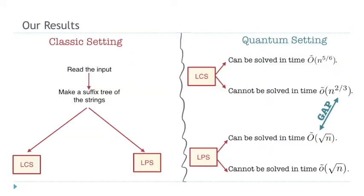The reason we consider these two problems is that they are pretty much equivalent in the classical setting — we can solve both of them in linear time. The algorithm for both uses a suffix tree and is basically the same, except that one line of the code differs between them. For both, we read the input, build a suffix tree, and finding one particular node gives us the solution for LCS, while finding another node gives the solution for LPS.